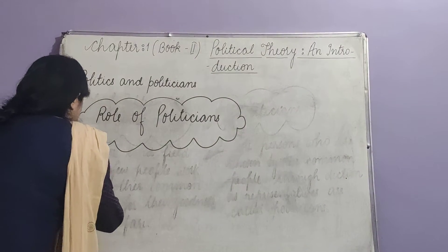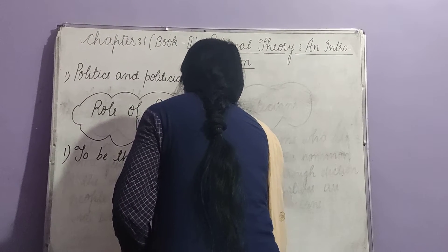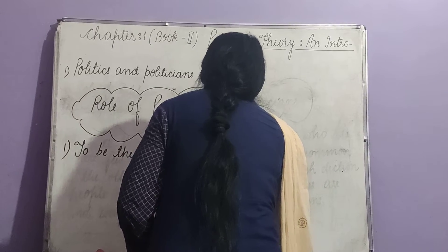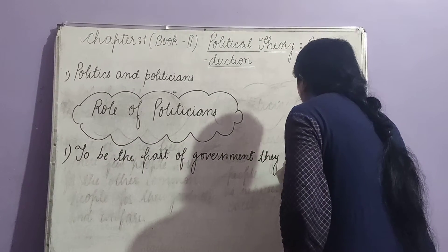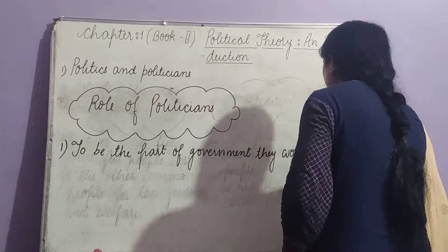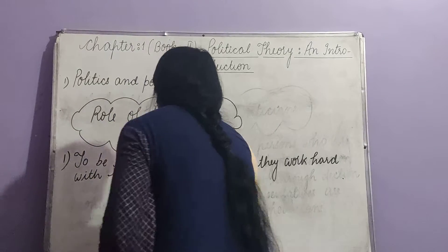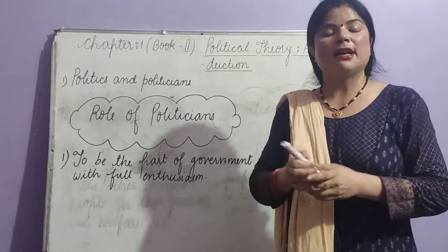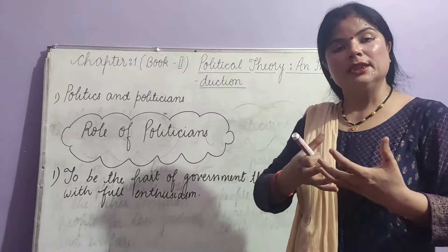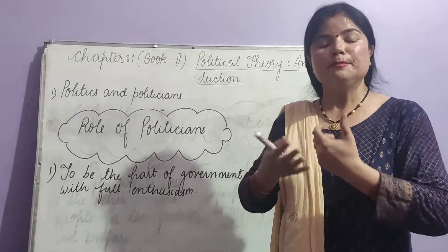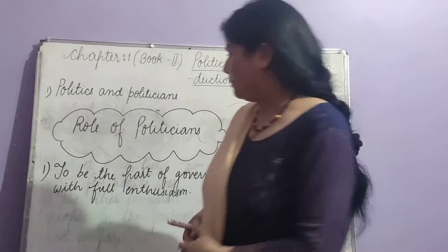First role: to be part of government, politicians work hard with full enthusiasm. They have a full interest in coming into the political field as part of government, so for this they work hard — they work as social workers first in the society, and then become able to be part of the government after being chosen as representatives by common people.